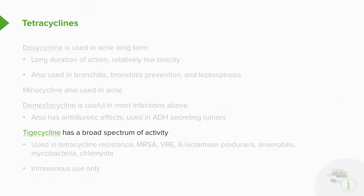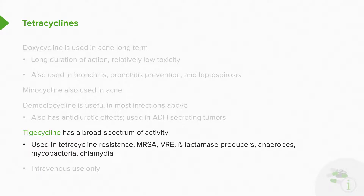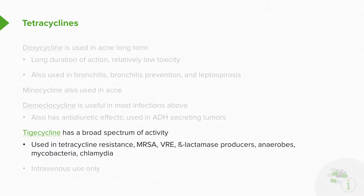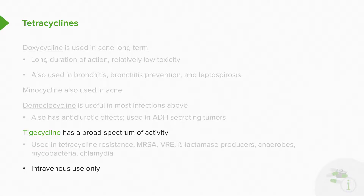Other medications like tigecycline have a broad spectrum of antibiotic activity, and they're often used when tetracycline resistance has developed. We use it sometimes in MRSA and VRE as well. We also use it in patients who have beta-lactamase-producing bacterial infections, anaerobic infections, mycobacterial infections, and chlamydia infections. Note that this particular medication is intravenous use only — it is not used orally at all.